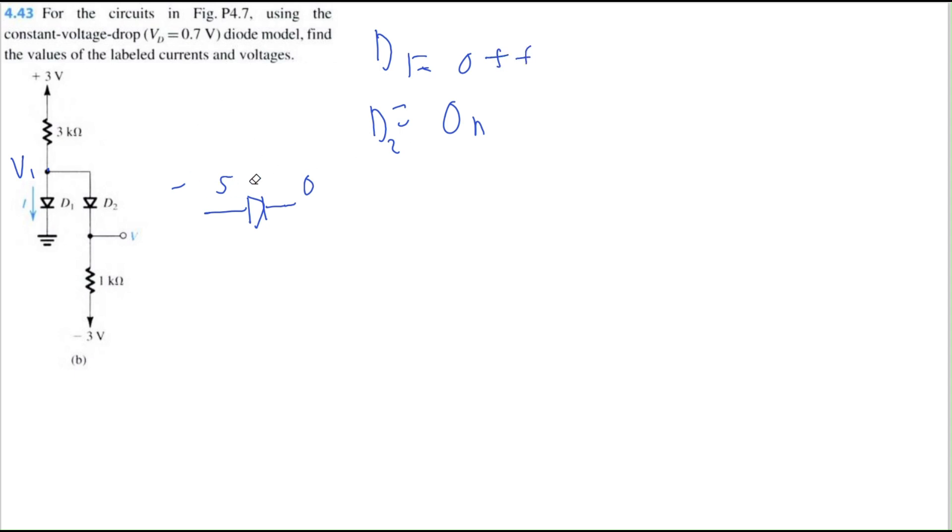Let's continue. So when D1 is off, we can immediately state that the current across the diode is 0. And now we can just solve for the voltage. So let's try to solve for this current going across here. We'll just call this I2.